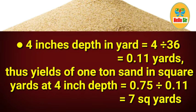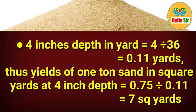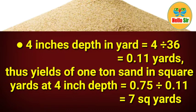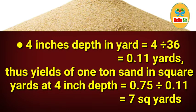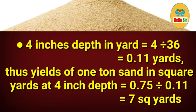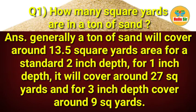For a 4-inch depth in yards: 4 divided by 36 equals 0.11 yards. Thus, the yield of one ton of sand in square yards at 4-inch depth is 0.75 divided by 0.11, which comes out to 7 square yards.